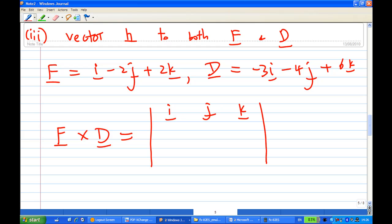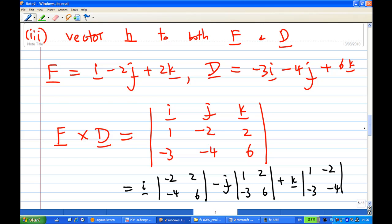F cross D is i, j, k, and 1, minus 2, 2 for F, and minus 3, minus 4, 6 for D. When you expand out, this will give you i times minus 2, 2, minus 4, 6, minus j, 1, minus 3, 2, 6, plus k, 1, minus 2, minus 3, minus 4.